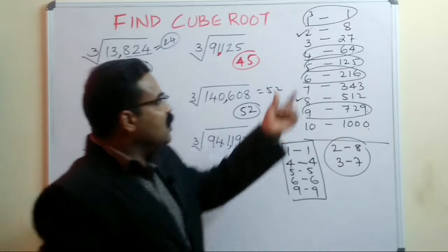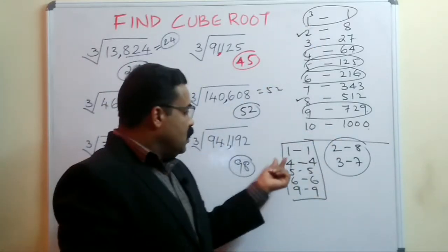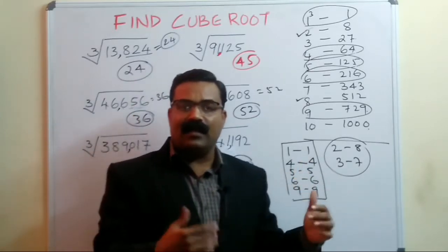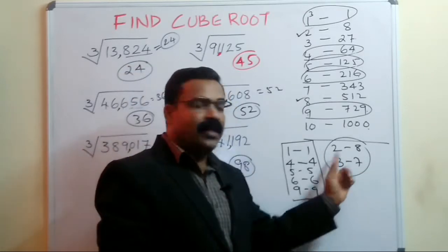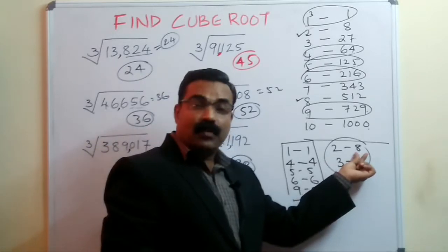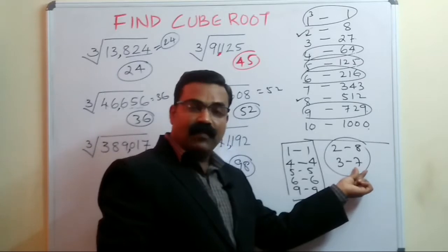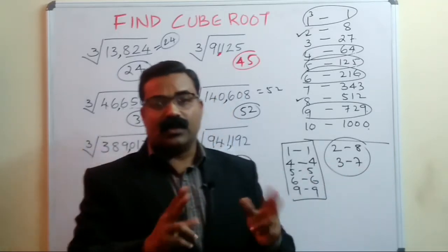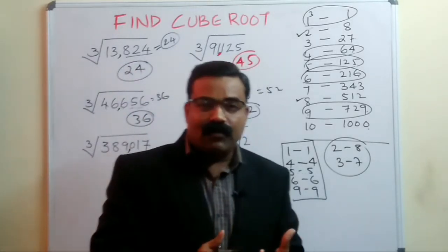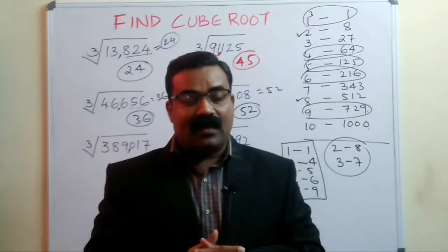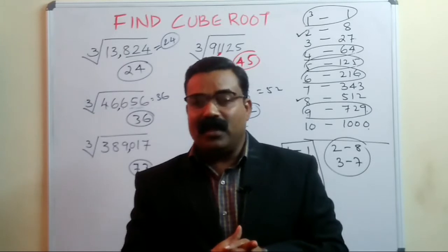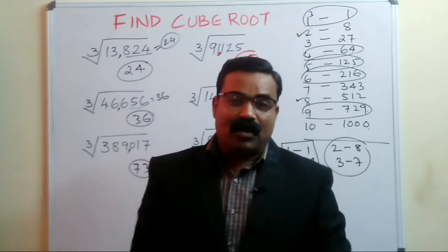To recap: remember the cubes of the first 10 numbers. Digits 1, 4, 5, 6, and 9 keep the same last digit in the cube root. The interchangeable pairs are 2↔8 and 3↔7 — if a perfect cube ends with 8 the root ends with 2, and if it ends with 7 the root ends with 3, and vice versa. This is the method for finding cube roots within seconds. Thanks for watching — please like, share, and subscribe. Prepare well and excel in your exams!